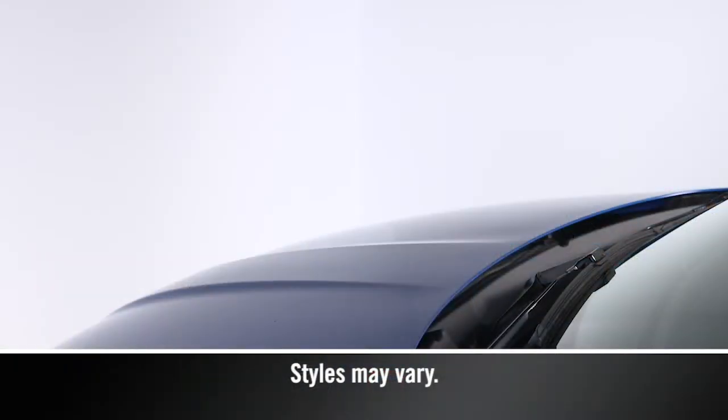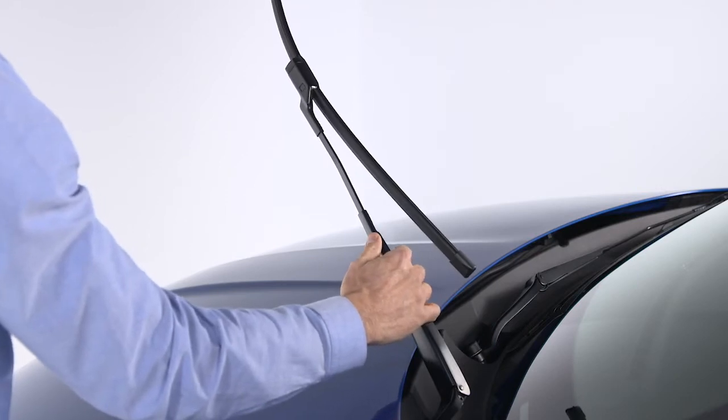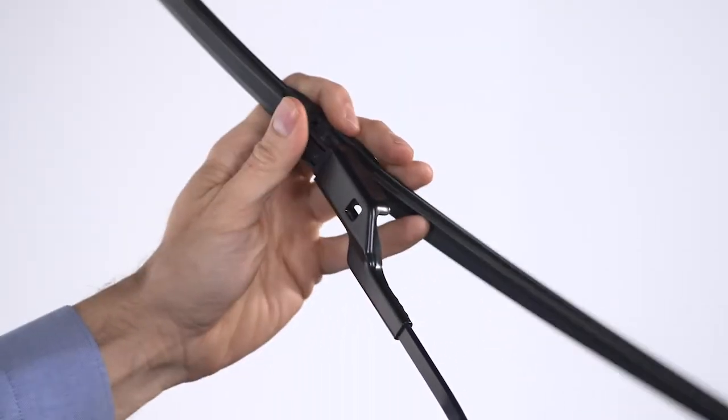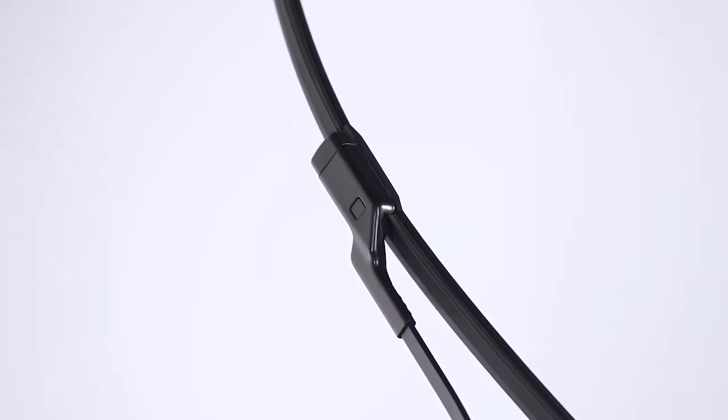To remove a windshield wiper blade, first raise it off the glass by lifting the wiper arm to the full up position. Press the release button on the blade and lift it up to remove it from the arm. Position the replacement wiper blade above the arm and insert it into the housing until it snaps into place.